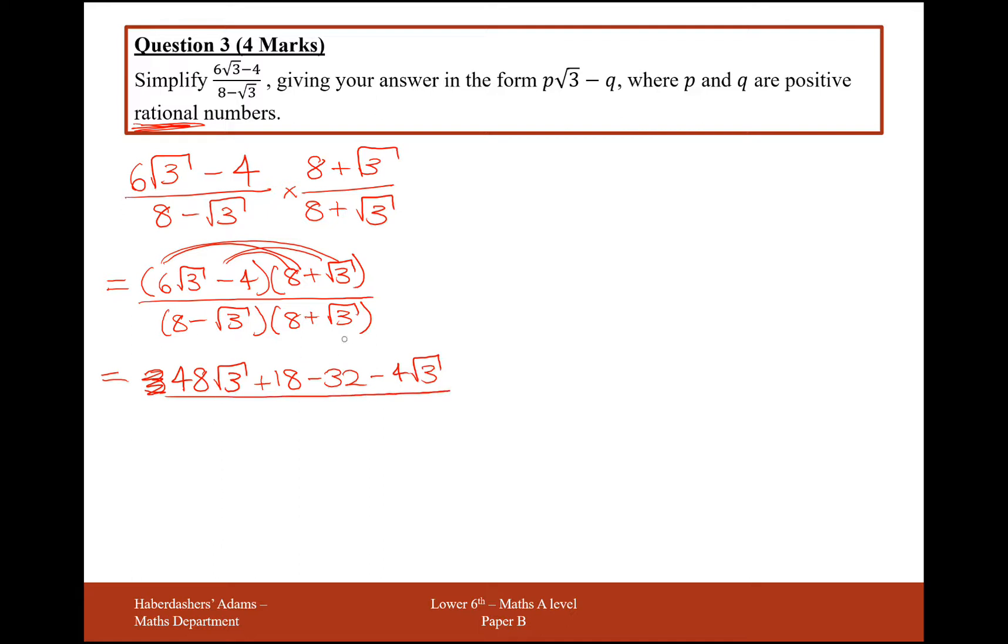On the denominator, we're going to get 64. We're going to get an add root 3, and a minus 8 root 3, which will cancel. And minus root 3 times root 3 is minus 3.